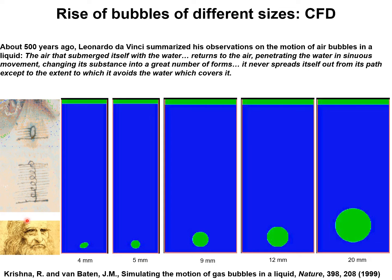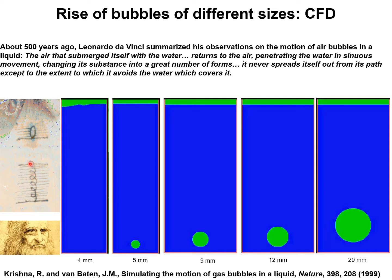About 500 years ago, Leonardo da Vinci summarized his observations on how air bubbles rise in a liquid. He talks about sinuous motions of a single bubble rising in water, and in one of his drawings he draws the motion of the liquid.